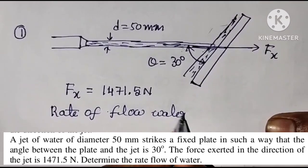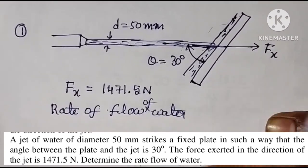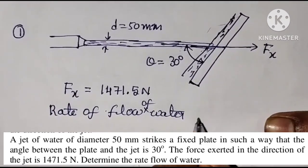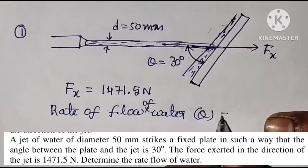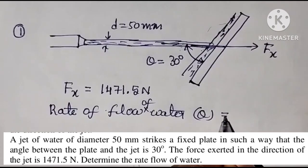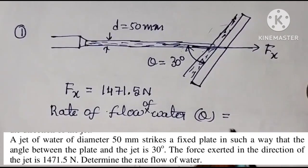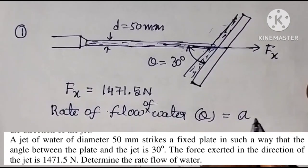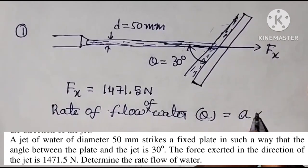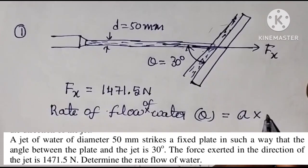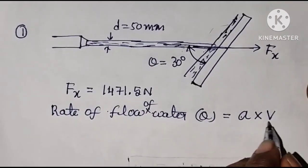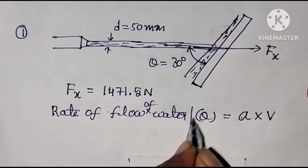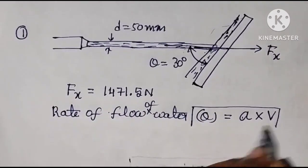Rate of flow of water means we have to find discharge. The formula for discharge is: Q equals cross-sectional area of the jet multiplied by velocity of the jet, Q = A × V.